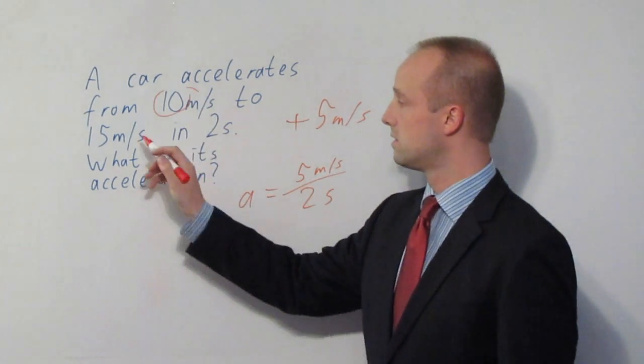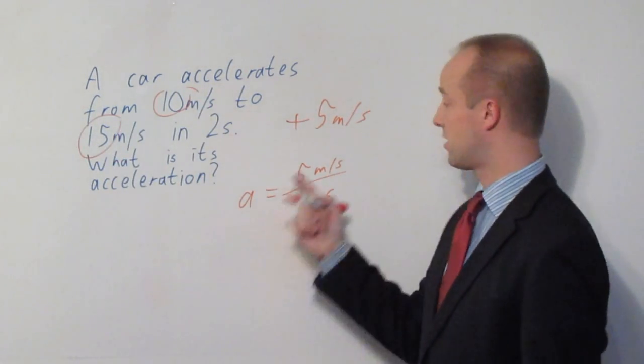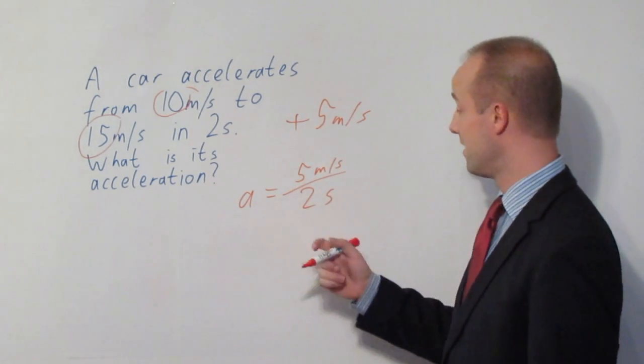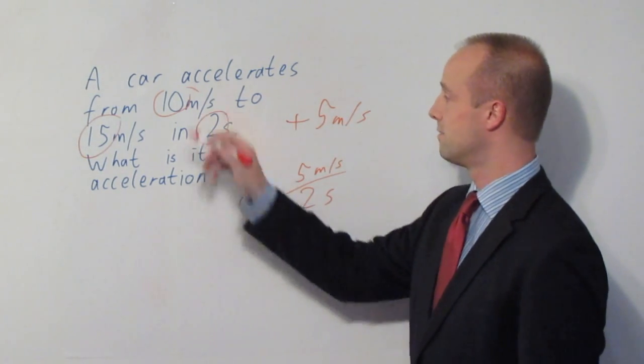Okay, so 10 goes to 15, it's gone up by 5. So that is the number you stick on the top of your calculation there. Then just divide it by your time.